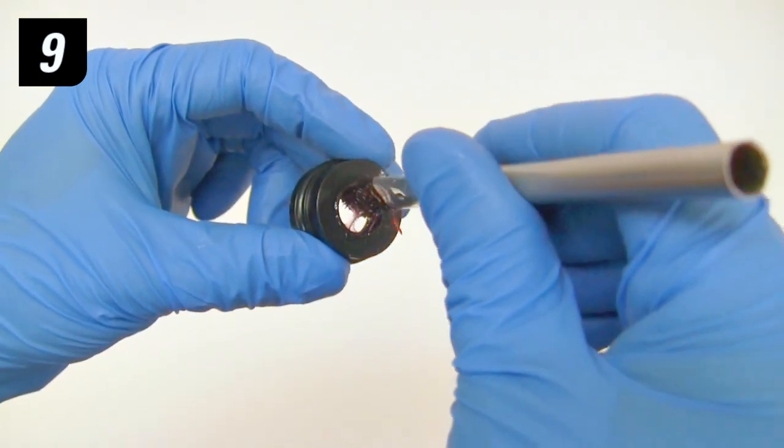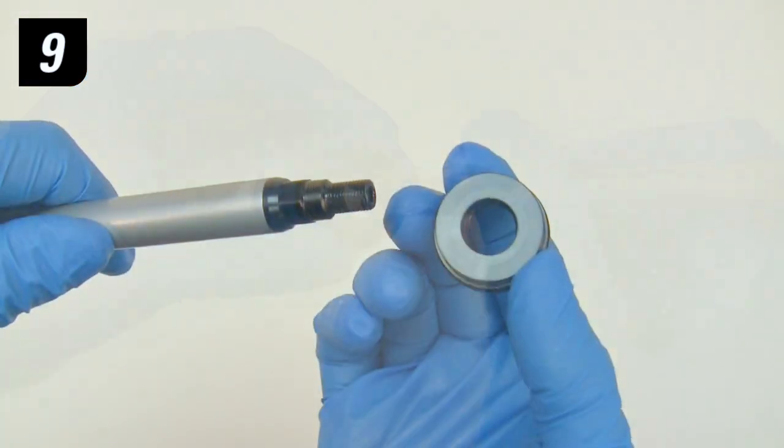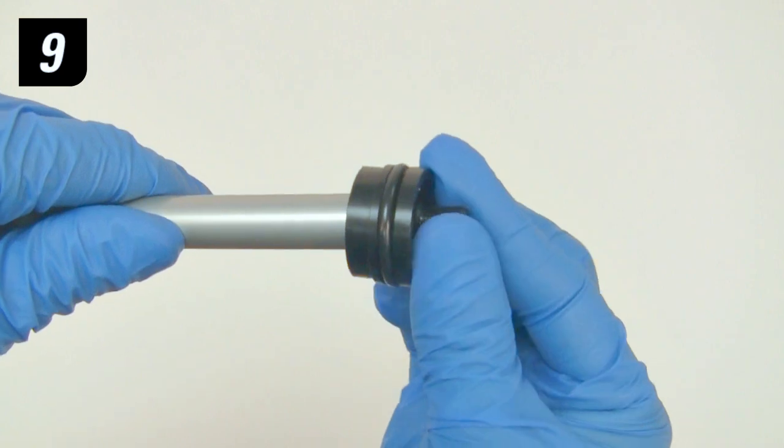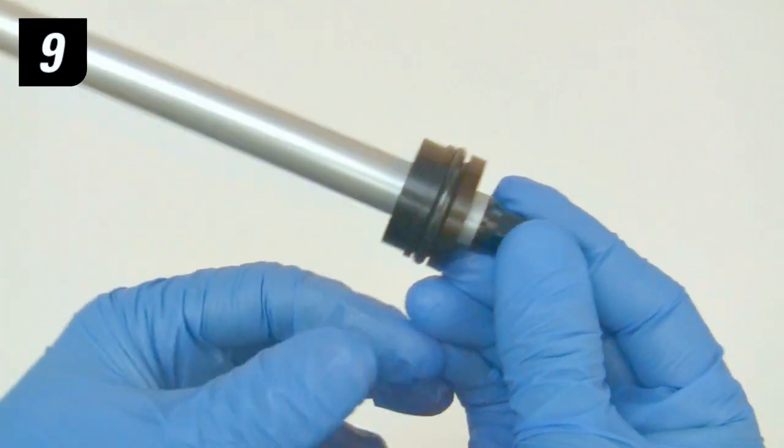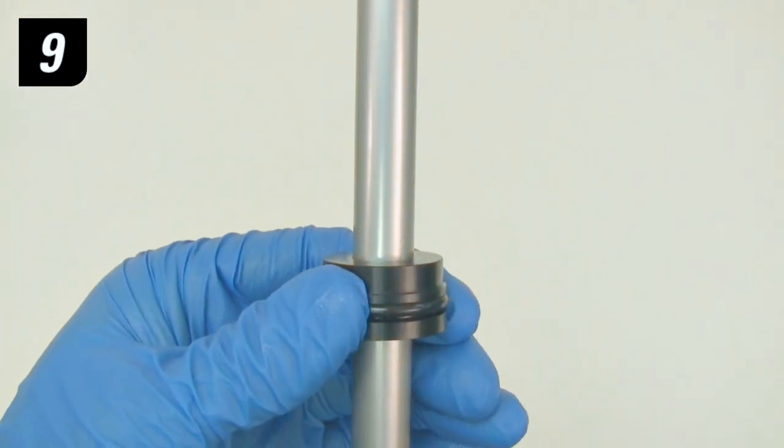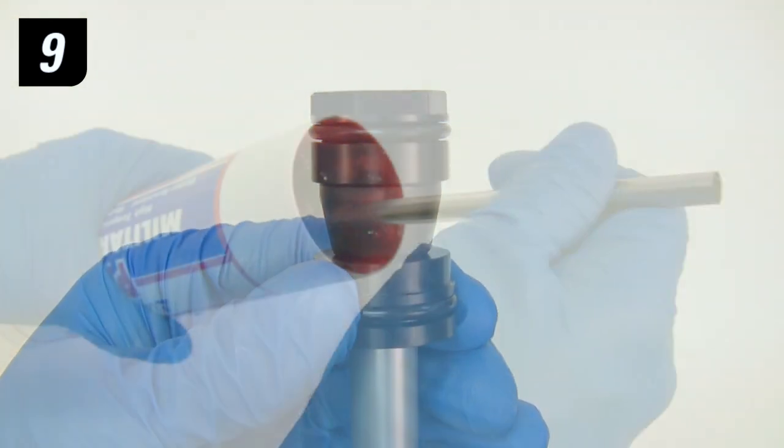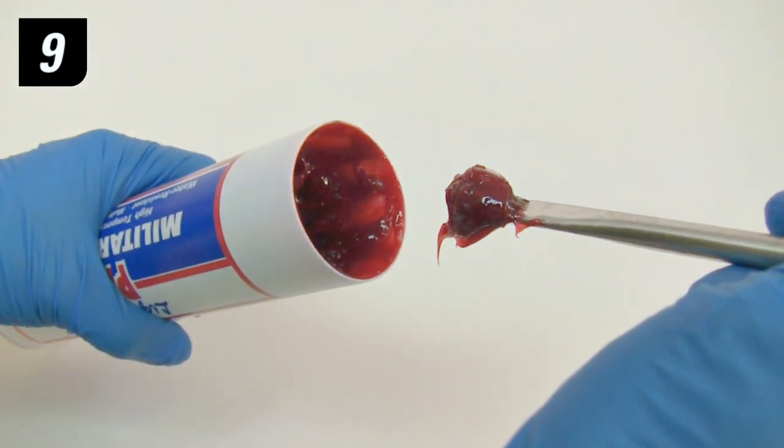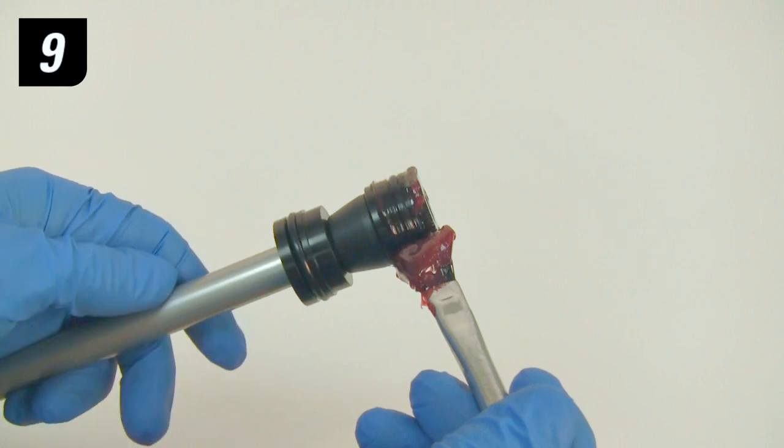Step 9. Apply a liberal amount of grease to the air seal head internal O-ring. Then reinstall the seal head onto the air shaft with the flat side of the seal head oriented toward the air piston and top-out bumper. Then use a brush to apply a liberal amount of grease to all of the O-rings.